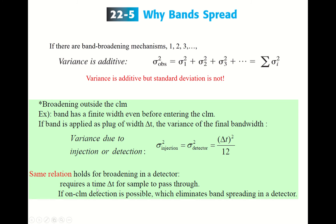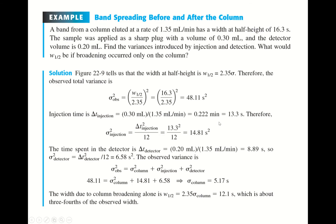In the detector there is a channel, and the separated solute must pass through that channel, so there will be band broadening, although very small. If on-column detection is possible, it eliminates band spreading in the detector. Here is an example of band broadening before and after the column.